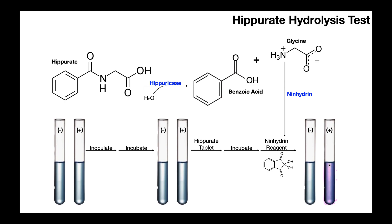The right tube is our positive test. However, if the bacteria do not express Hippuricase, they won't be able to break down the Hippurate from the tablet, so they won't produce benzoic acid or glycine. There's going to be no glycine available for the ninhydrin to react with, and as a result, it will remain clear — basically just the color of the original inoculate.